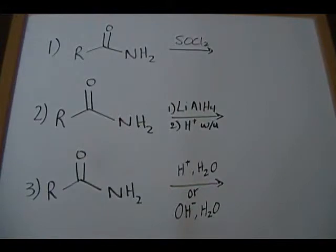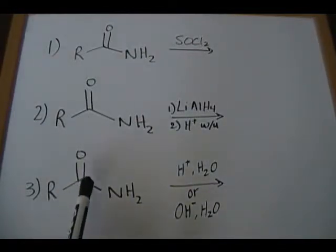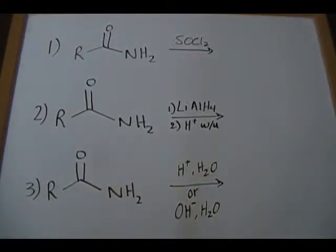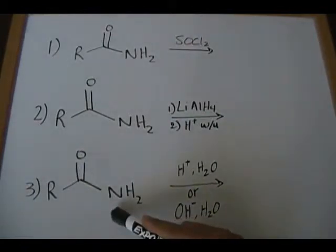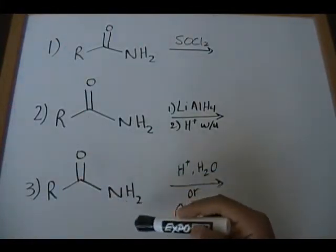We're focusing on three reactions that deal with amides. An amide typically takes the structure I've shown here — in each of these starting materials you have an R group representing a carbon group, a carbonyl, and a nitrogen portion. There are different types of amides: primary, secondary, and tertiary, and that depends on the number of carbons attached to the nitrogen.